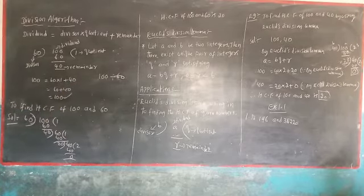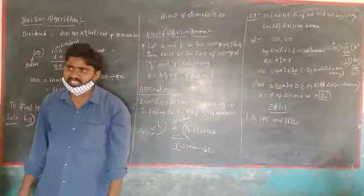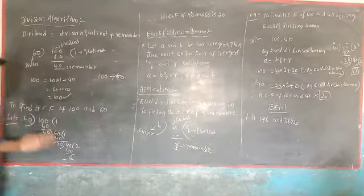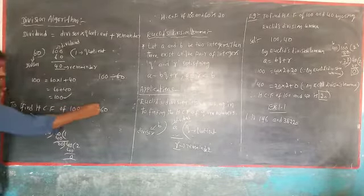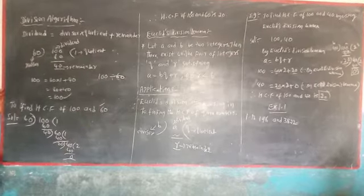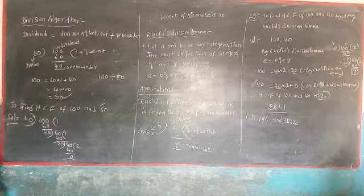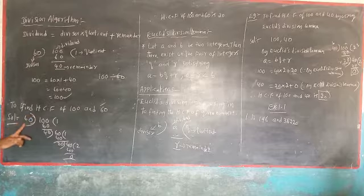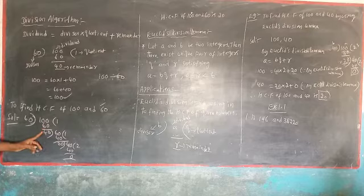Also, in the previous classes, you learned how to find the HCF of numbers — the HCF of given numbers. For example, you find HCF of 100 and 60. So here, you take the smaller number as the divisor, and the larger number as the dividend. So larger number 100 is divided by smaller number 60. This goes once, remainder is 40.